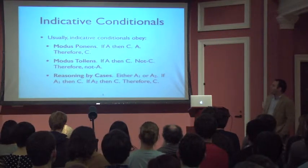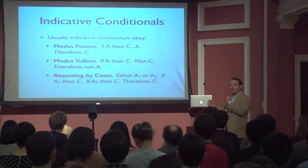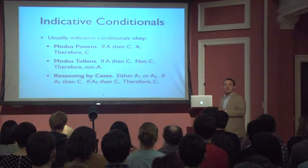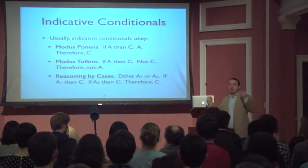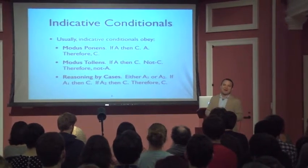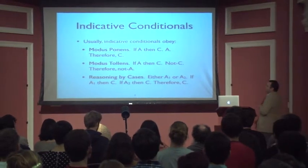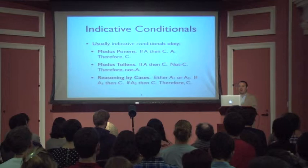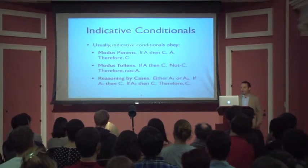The last one I want to talk about is called reasoning by cases: either A1 is true or A2 is true — one of these two things is true. If the first one is true, then C. If the second thing is true, then C. Therefore C. There are only two ways out of the building; either way, you confront the exact same monster; therefore you confront that monster. So those are three rules that most conditionals seem to obey, and that's what I mean by a behaving conditional — one that we're able to infer in accord with all of these rules.